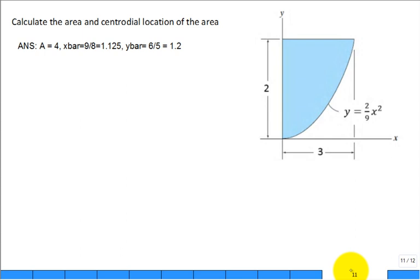The problem asks to calculate the area and the centroidal location of this shaded blue area. Here are the answers. The area is 4, the x-bar is 9 eighths, and the y-bar is 6 fifths. Let's go step by step through this problem.